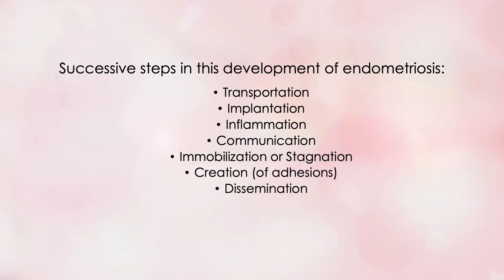The successive steps in the development of endometriosis are: transportation, implantation, inflammation, communication, immobilization or stagnation, creation of adhesions, and dissemination. Isn't it just dandy that they all end in T-I-O-N? So that's it for the review of endometriosis itself.